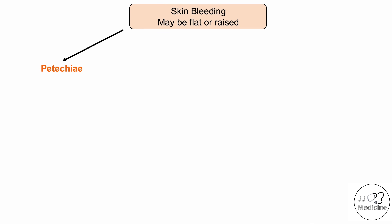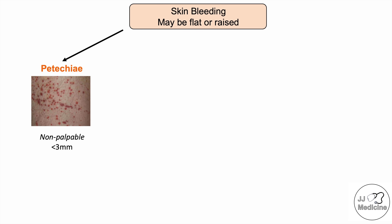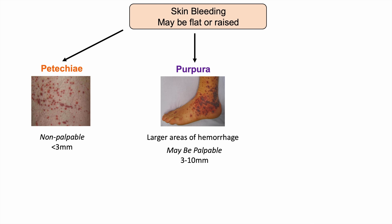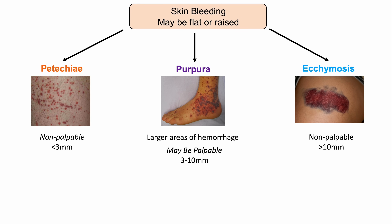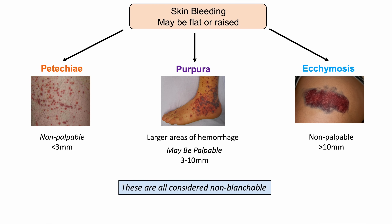If there is bleeding under the skin, we use blood as a constituency. These lesions can be flat or raised. Petechiae are non-palpable and less than 3 millimeters. Purpura are larger areas of hemorrhage between 3 and 10 millimeters, and may be palpable. Ecchymosis is greater than 10 millimeters and is often non-palpable. All three are considered non-blanchable.